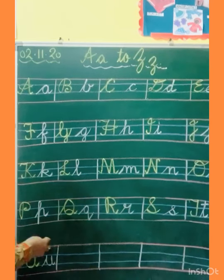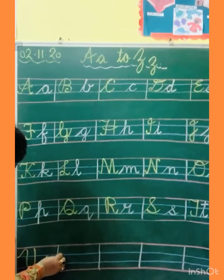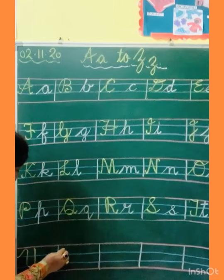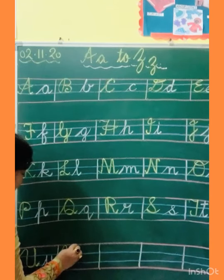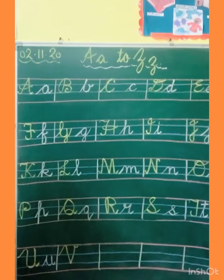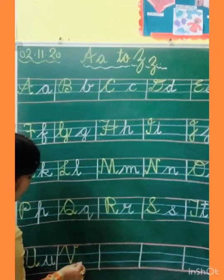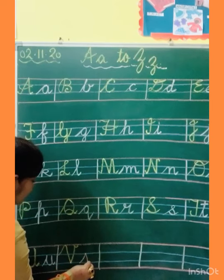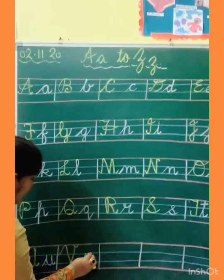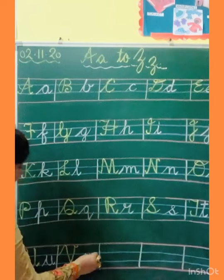Now capital V. Slanting, turn, make slanting line, again slanting line, and kick. And small V: slanting, make small V, and kick.